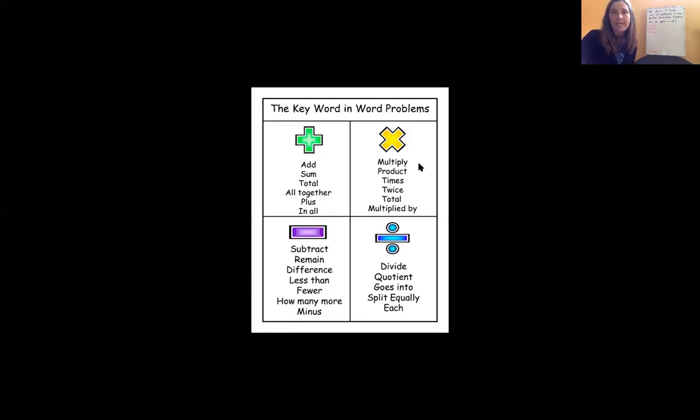Maybe you see words like multiply, product, times, twice, maybe even three times, four times, five times, total, multiplied by. These would be words that they would use as keywords to indicate you need to multiply.